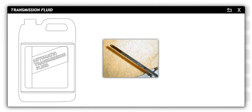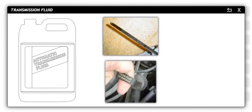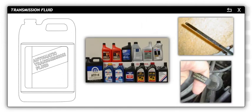Since a significant number of automatic transmission failures are caused by overfilling or using the wrong transmission fluid, many manufacturers do not include a dipstick. A fill plug is used on these vehicles to check and refill the fluid. There are many different ATF types and specifications, and each transmission is designed to use a specific fluid type — it's important to use only the specified type.